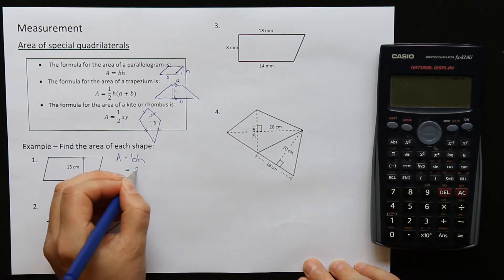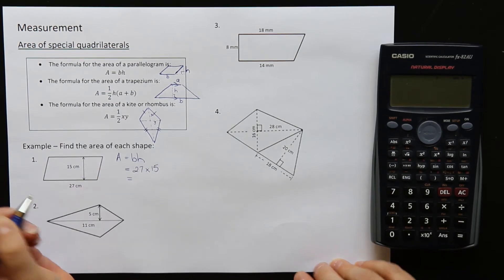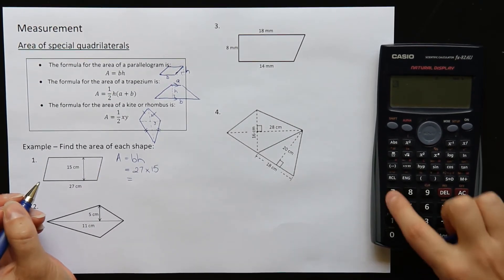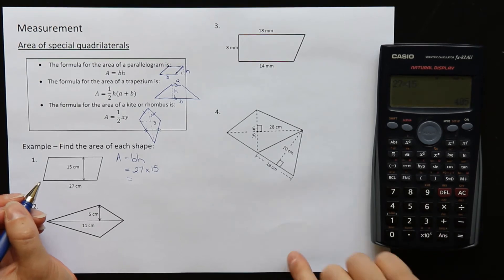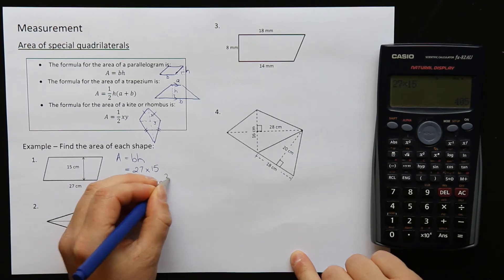So I just need to do 27 times 15 and I get 405 centimeters squared.